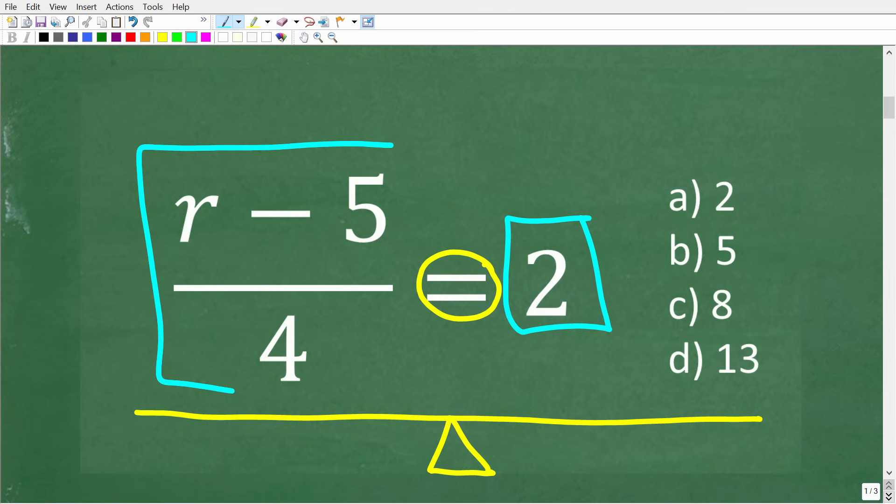this entire left hand side here, this entire thing needs to represent the value of 2. Because 2 is equal to 2, right? So in other words, 7 is not equal to 2. So we need to think about what value r needs to be in order for this entire thing to be equal to a 2.